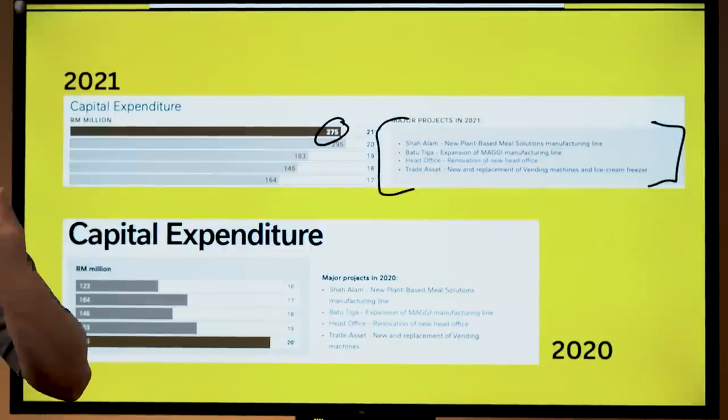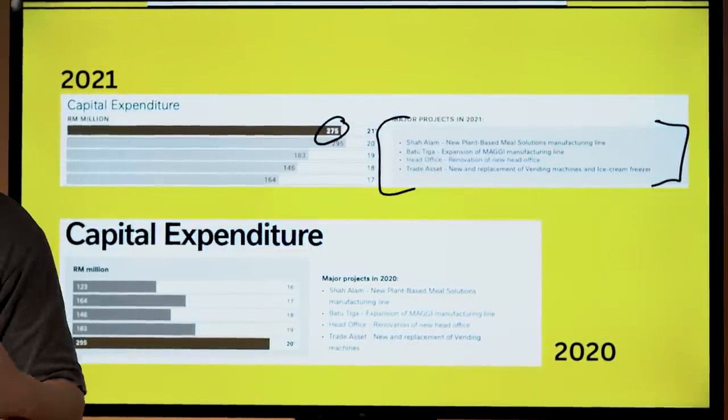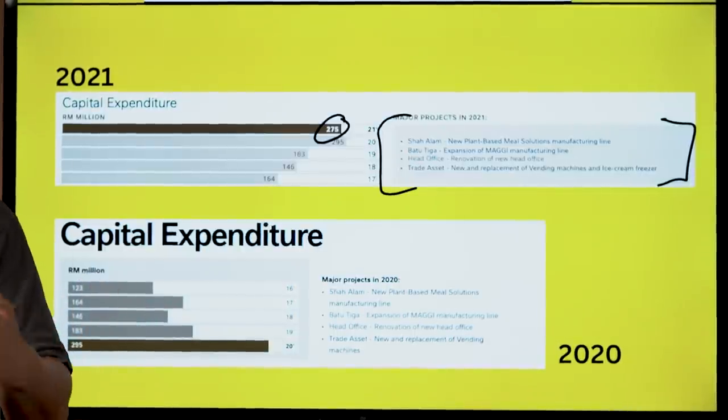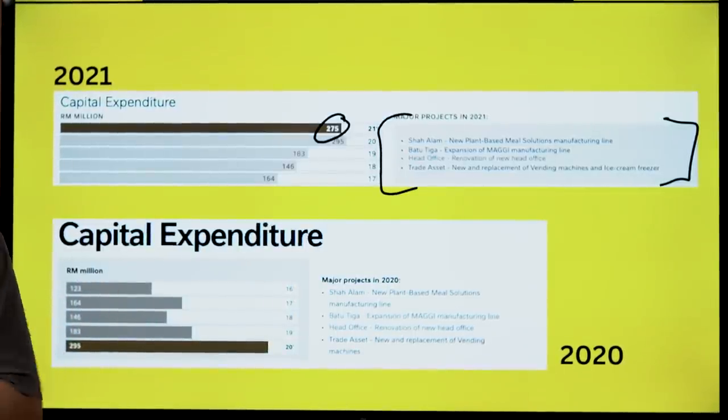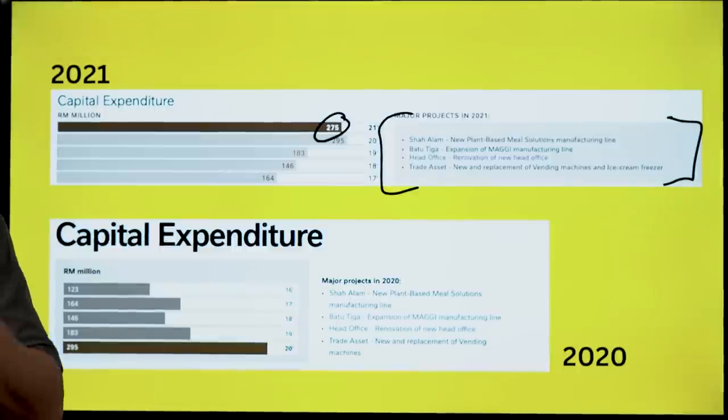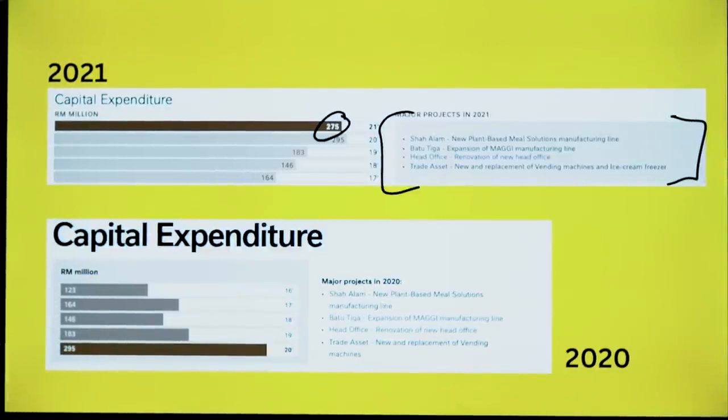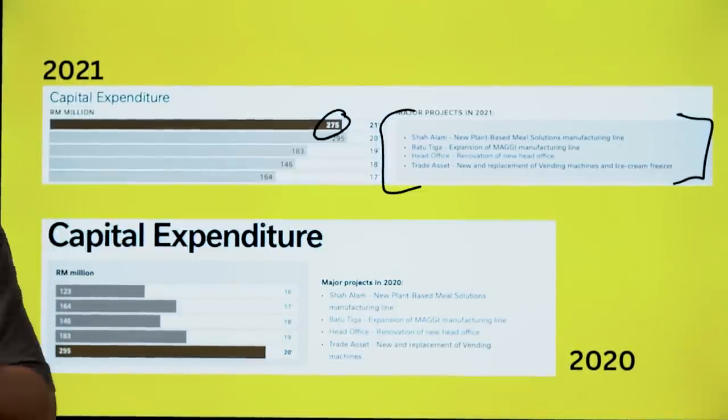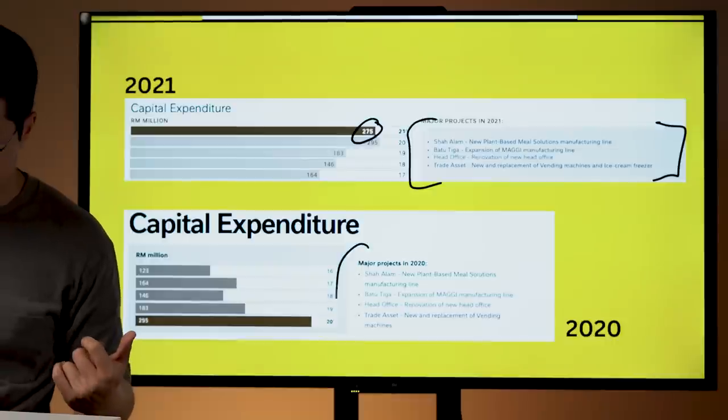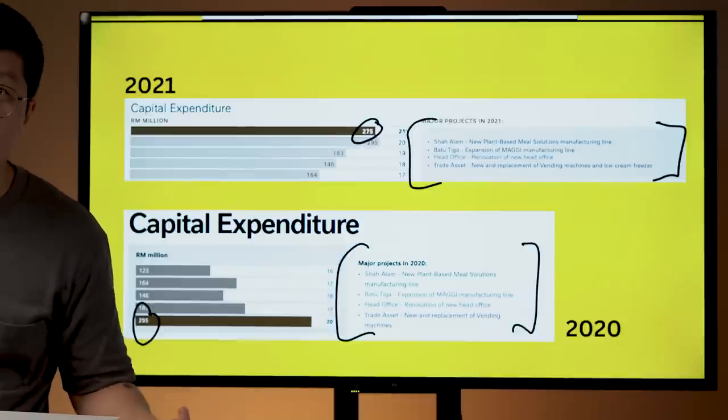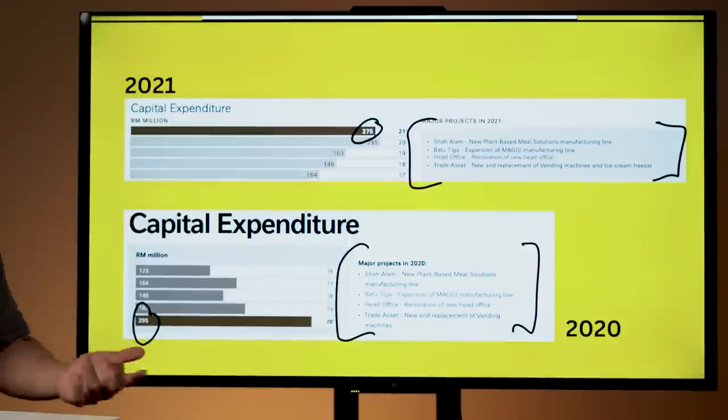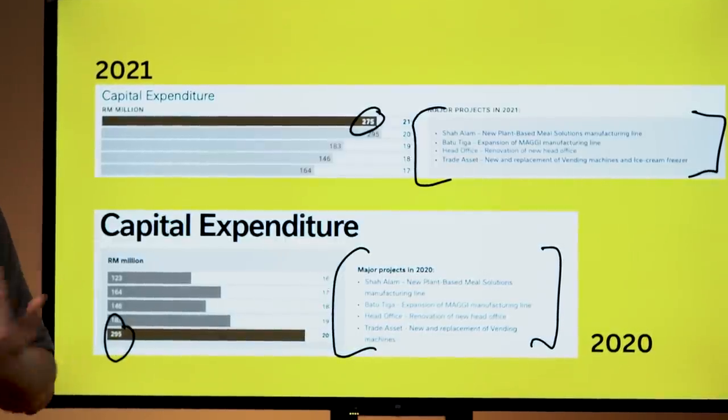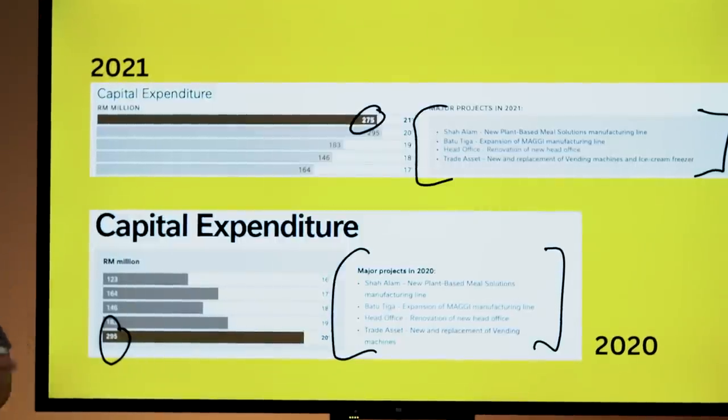Most of it is being used to invest in their plant-based meal solution manufacturing line. Part of it is used to do expansion of Maggie manufacturing line. It's also to help them to renovate their new head office, where they just shifted from the curve to Bandar Utama. And on and off, they also need to replace those ice cream vending machines and those canned drink vending machines that you see in supermarkets. In FY 2020, most of their capex of around RM295 million is also used for roughly the same purpose.